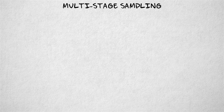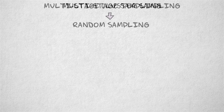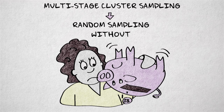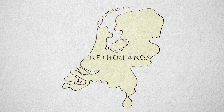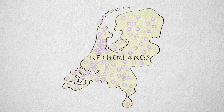Let's turn to multi-stage cluster sampling, the final type of random sampling I want to discuss. Multi-stage cluster sampling allows us to use random sampling without going bankrupt. Consider sampling frames that consist of all inhabitants, students, or eligible voters in a certain country. If we were to randomly select elements from these frames, we would have to travel all over the country. In most cases, this is just too expensive.